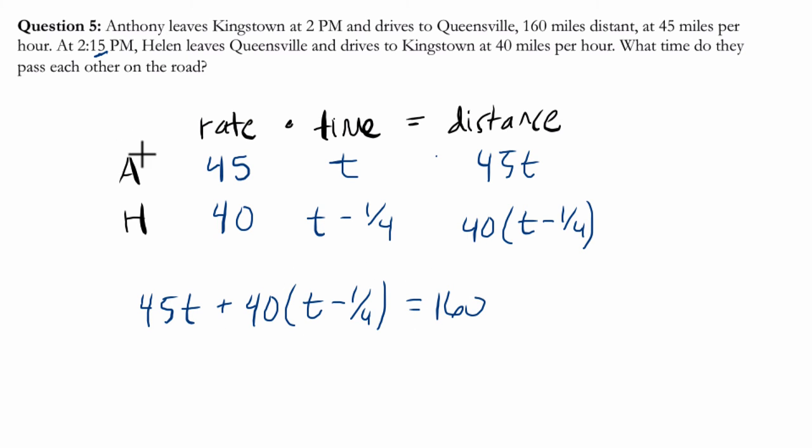Because they're meeting somewhere in the middle. So wherever they meet, draw a little diagram right here. This is a lame diagram, I guess. But Kingstown and Queensville. If he's going, let's say, here. He's a little bit faster and he leaves earlier. So I'm going to assume he's going to cover more distance. So this is the distance that Anthony goes.